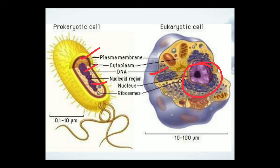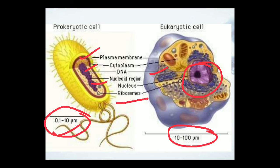Both of them contain ribosomes. The size of the prokaryotic cell ranges from 0.1 to 10 micrometers, whereas the size of the eukaryotic cell ranges from 10 to 100 micrometers. So this is the main difference: the nucleoid versus nucleus, and the size.